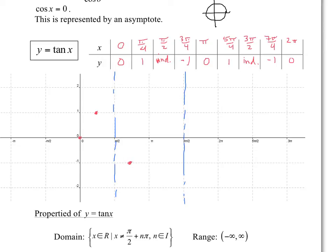At pi you get 0, at 5 pi over 4 you get 1, and we repeat that pattern. Notice that if we kept repeating, we'd have an asymptote at 5 pi over 2. The shape of this graph is like a half parabola, and don't forget you're always going towards the asymptotes.